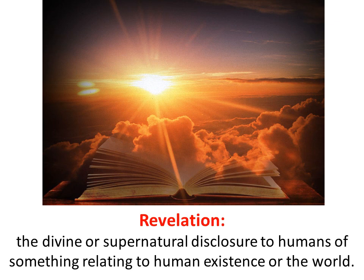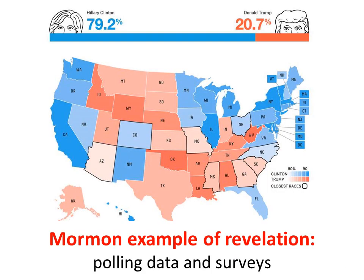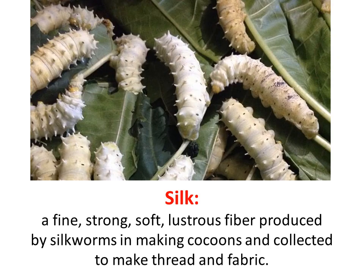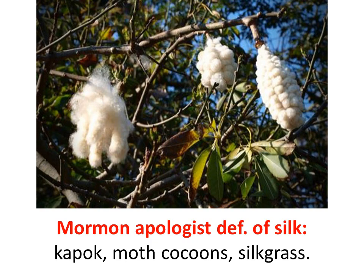What is a revelation? One definition is the divine or supernatural disclosure to humans of something relating to human existence or the world. But now we have seen church leaders getting revelation through polling data and surveys — doing polls and surveys, and boom, now we can get a revelation. Let's define silk — a fine, strong, soft, lustrous fiber produced by silkworms, in making cocoons, collected to make thread and fabric. But since there was no silk in Book of Mormon times, Mormon apologists have redefined silk as being kapok — which is a tree — moth cocoons, or silk grass. The kapok makes this weird cottony stuff, and I guess that's what silk is. It doesn't come from silkworms anymore.